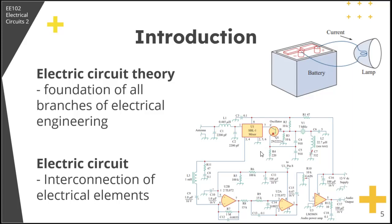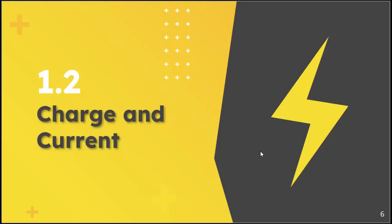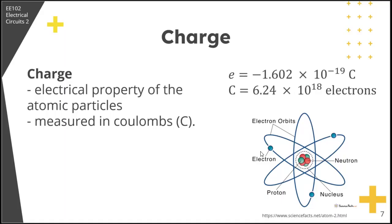Let's now define other basic terms in electric circuits: charge and current. The most basic quantity in an electric circuit is the electric charge or electricity. We know from elementary physics that all matter is made of fundamental building blocks known as atoms, and that each atom consists of electrons, protons, and neutrons. The charge on an electron is negative 1.602 × 10⁻¹⁹ coulombs, while a proton carries a positive charge of the same magnitude. The presence of equal numbers of protons and electrons leaves an atom neutrally charged.